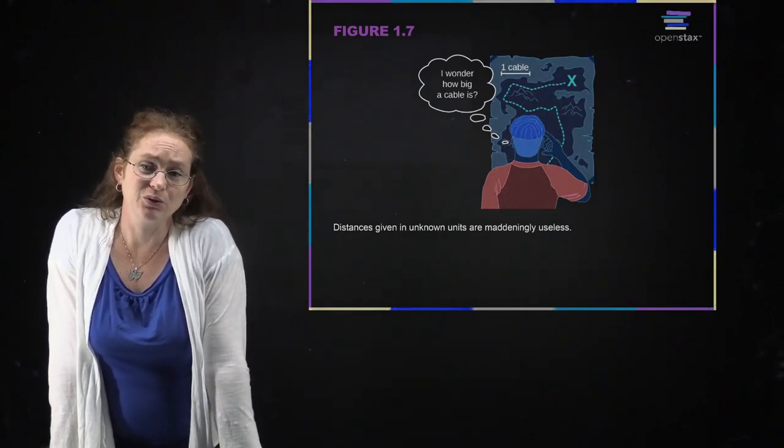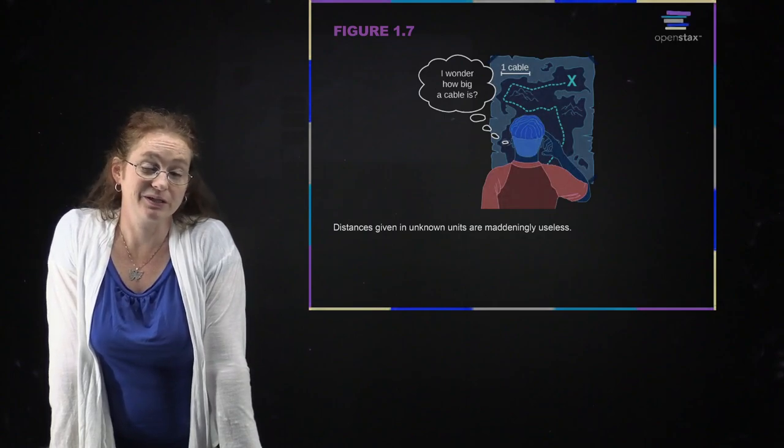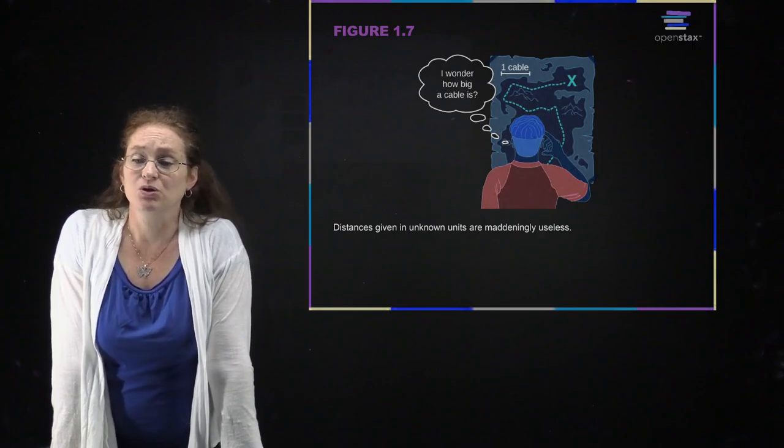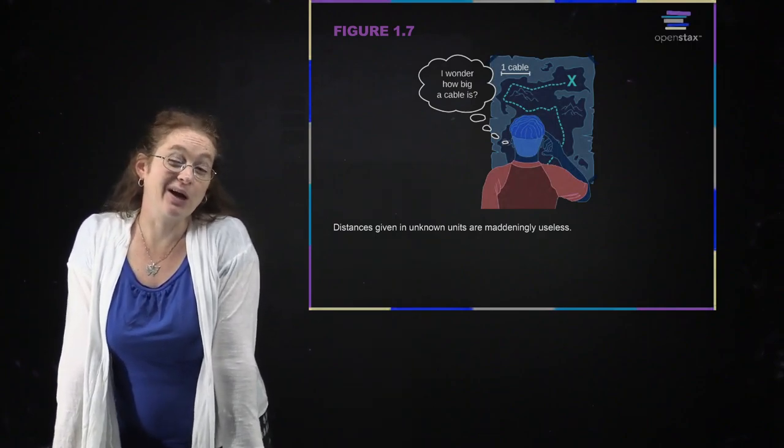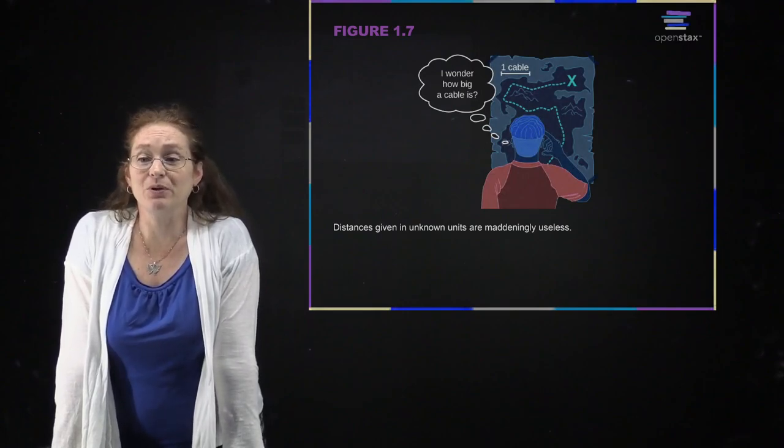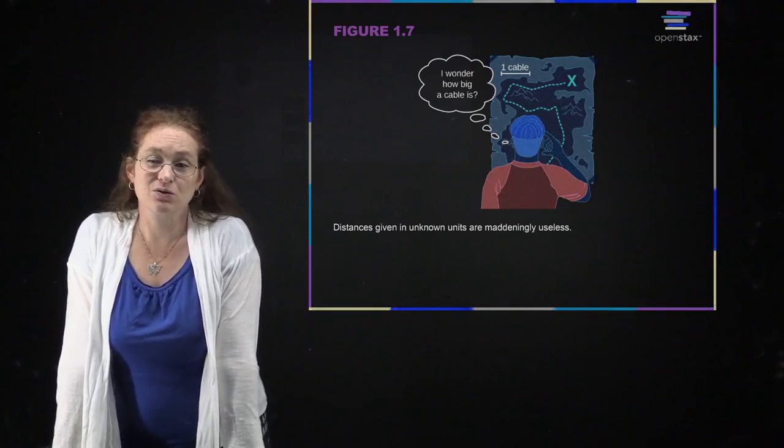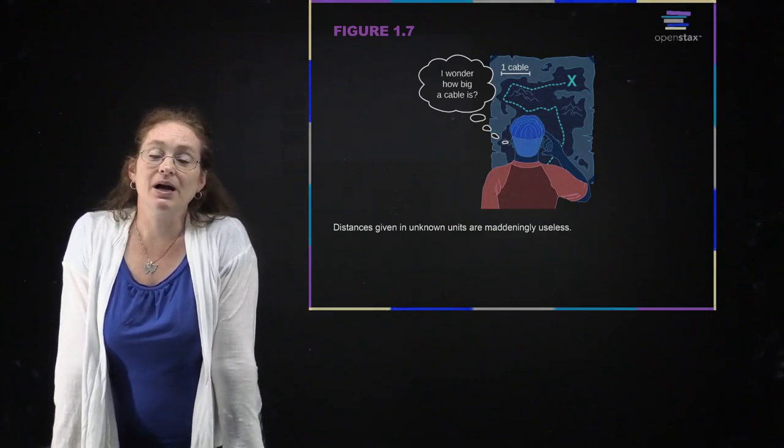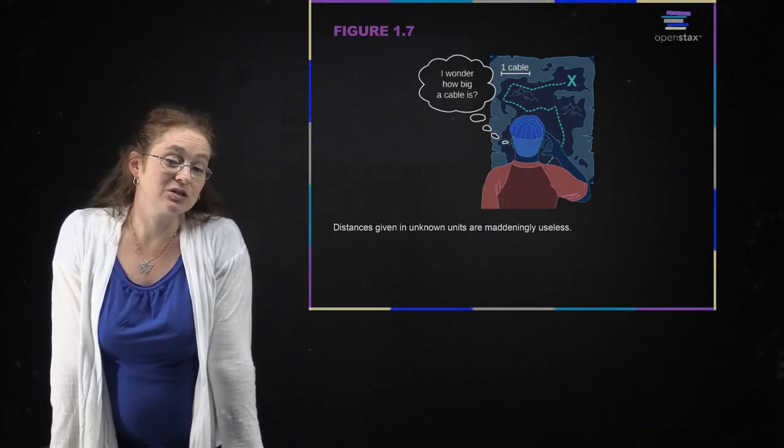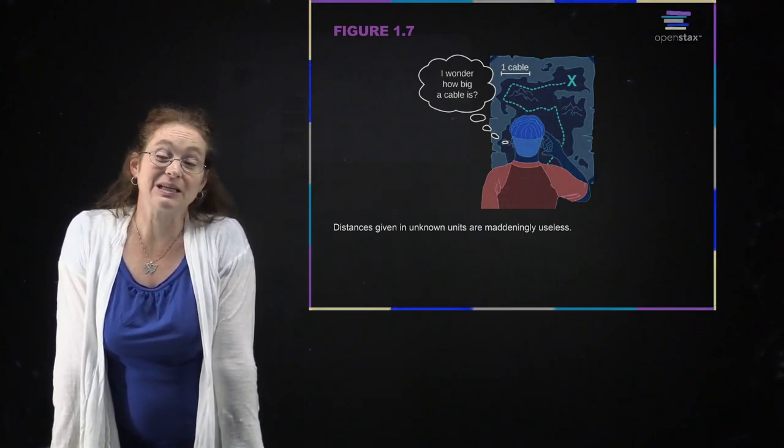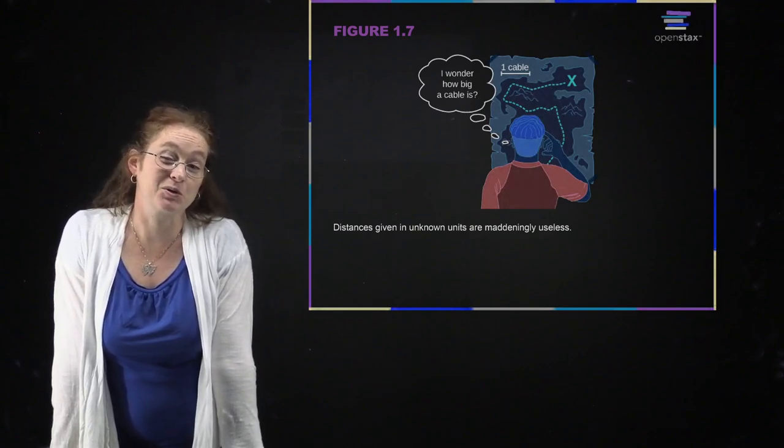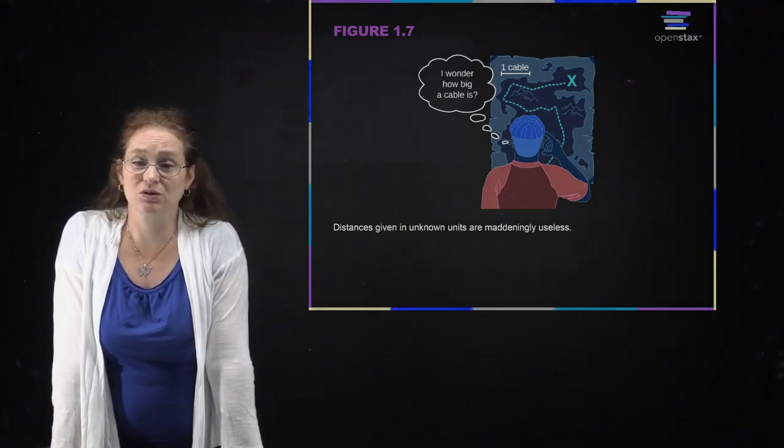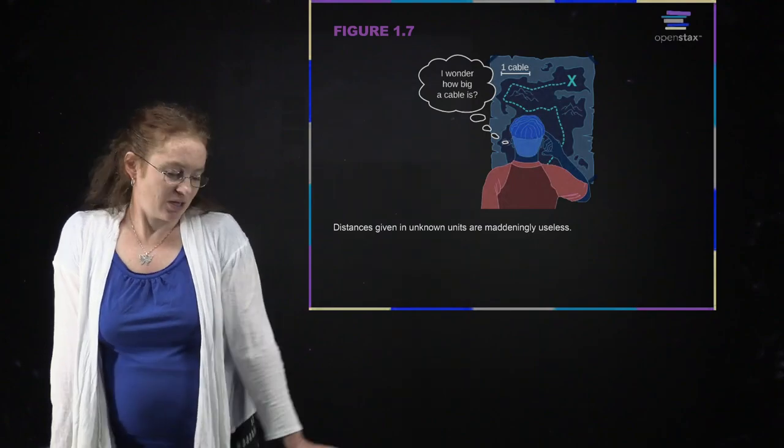Whenever you are giving some answer, in general, it should have units. Now, we do work with some numbers in physics that are unitless, but you should be very careful because nearly all of them actually have units. An example of a unitless number is radians. Radians are technically unitless because they are a ratio of different lengths, but we often call them radians just to keep track of units. By default, nearly everything should have units.